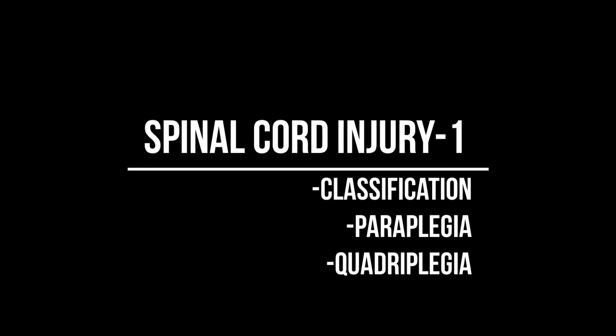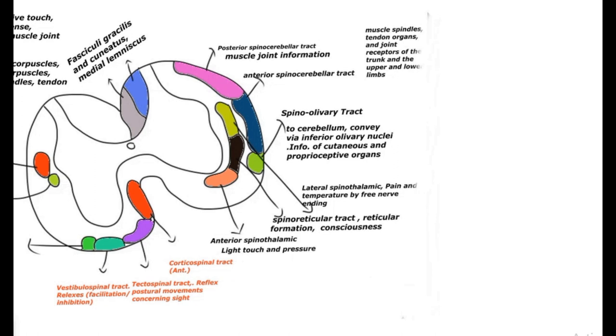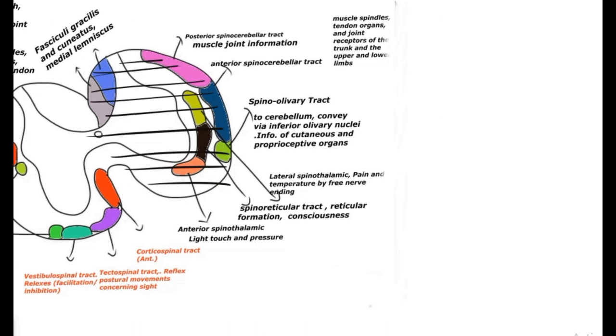Spinal Cord Injury Part 1. In this video I am talking about the classification of spinal cord injuries: paraplegia and quadriplegia. In order to understand spinal cord injury, one must have a fair idea about the tracts running through the spinal cord — the sensory tracts and motor tracts.